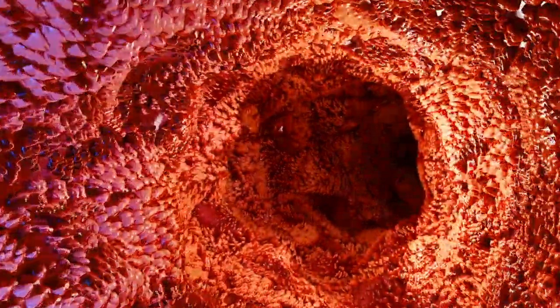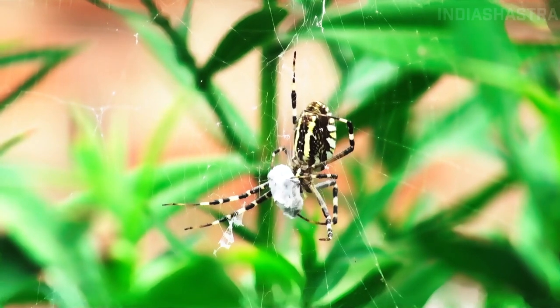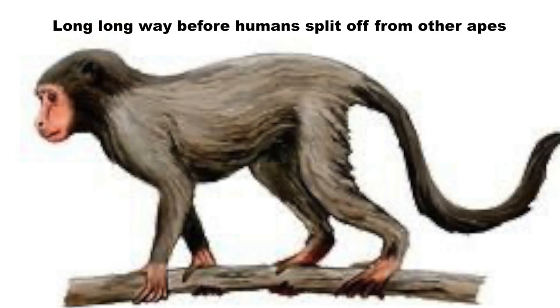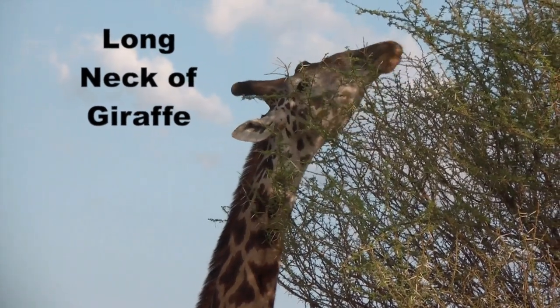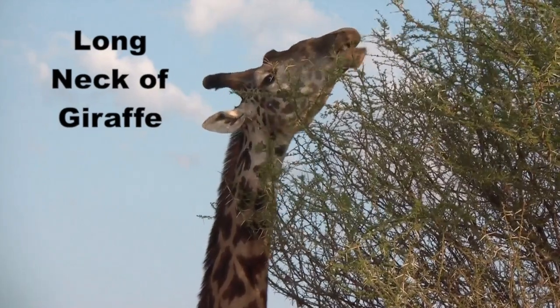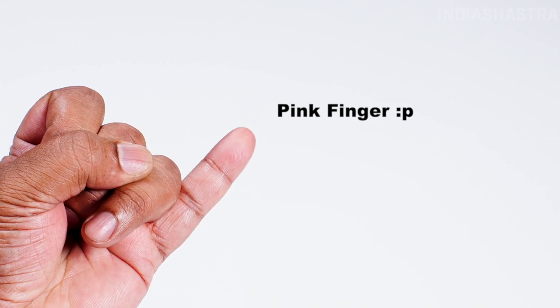Our respected soldiers serve the nation in minus 16 degrees without adequate facilities — they are humans and still surviving. Over a period of time, through natural selection and evolution, an organism adapts itself for survival and reproduction. For example, our ancestors had tails but lost them as they moved from trees to plains. Giraffes evolved long necks to access tender leaves on top of trees.